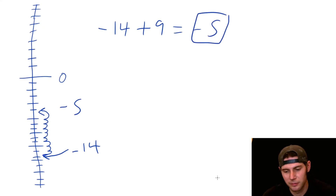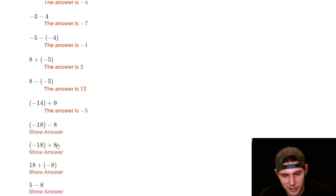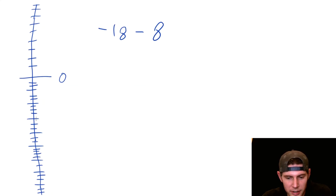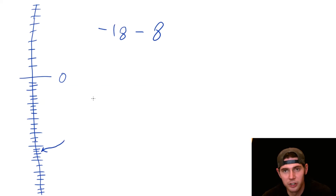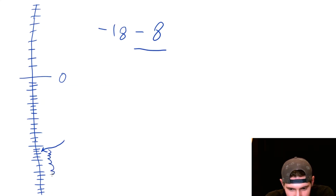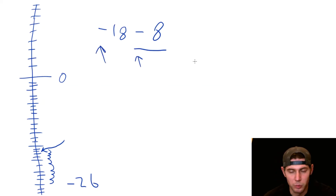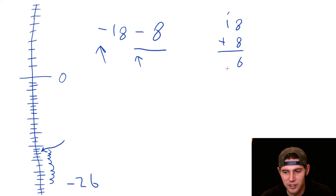Next: negative eighteen minus eight. We start at negative eighteen and then go down eight more. Counting it all out gives us negative twenty-six. Another way to think of it: negative eighteen and negative eight are both working together going deeper in the hole, so we almost add eighteen plus eight to get twenty-six, and since we're going deeper it's negative twenty-six.